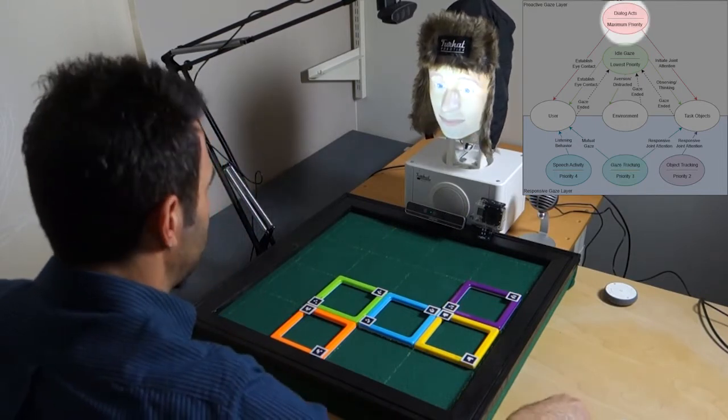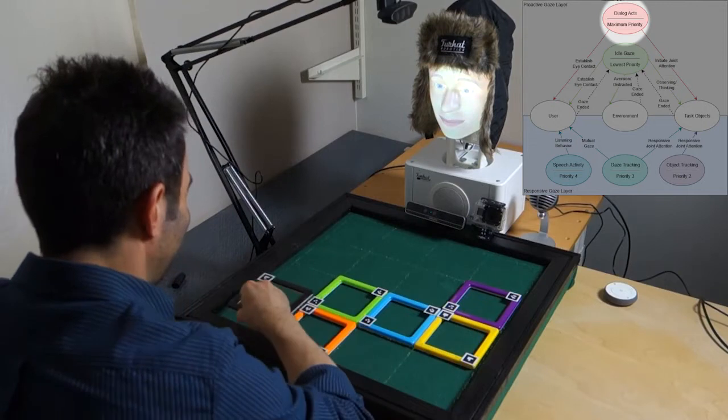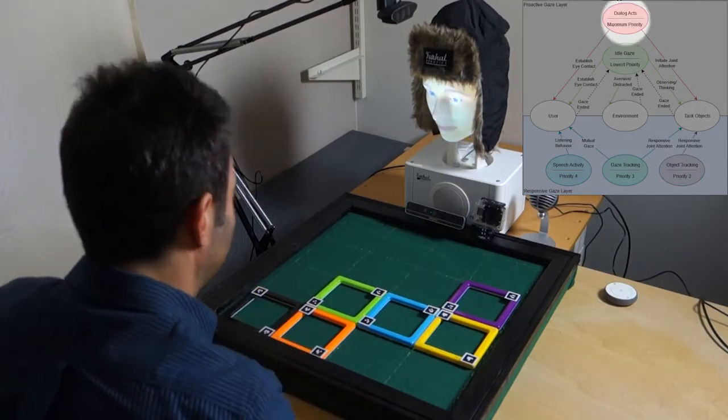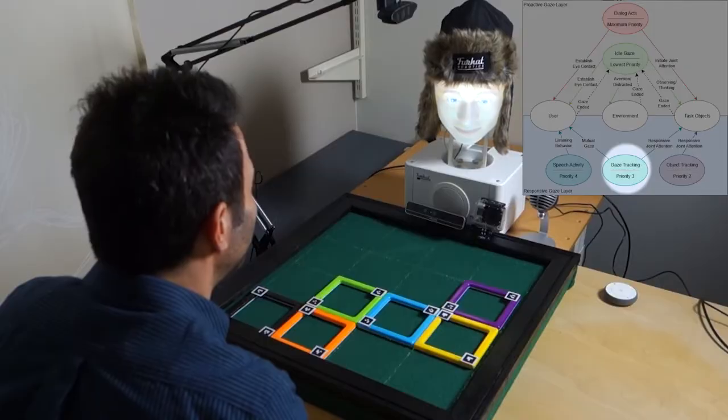Typically, any scenario where people and robots naturally interact on a task over a shared visual space would benefit from believable, responsive gaze behavior.